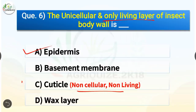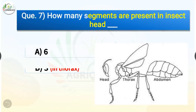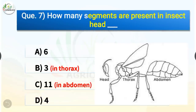Question number 7. How many segments are present in the insect head? The options are 6, 3, 11, or 4. The correct answer is option A, 6. There are 6 segments present in the insect head, whereas 3 segments are present in the thorax, and 11 segments are present in the insect abdomen.